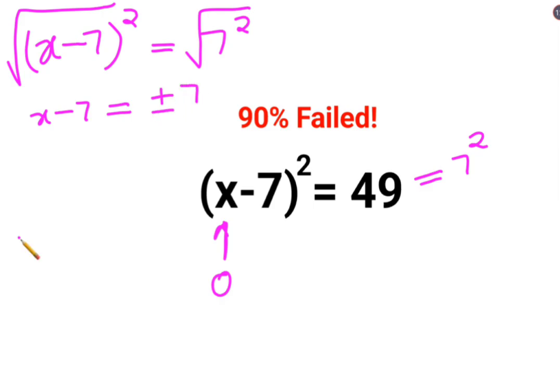So I will say x minus 7 is equal to 7, or x minus 7 is equal to minus 7. We have over here adding 7 on both sides. So we have x is equal to 7 plus 7 which is 14. And here we have x is equal to minus 7 plus 7 which equals 0.